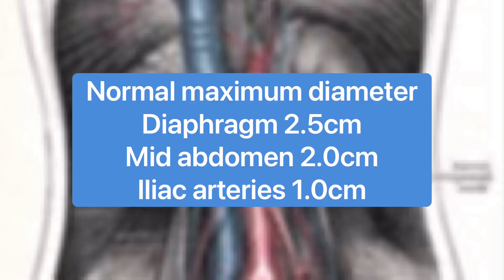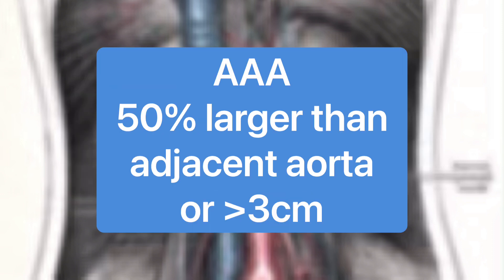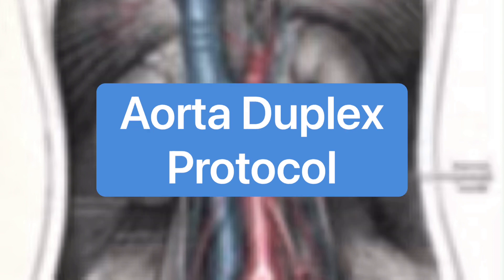The normal aorta measures at the diaphragm 2.5 centimeters, at the mid-abdomen 2 centimeters, at the bifurcation 1.8 centimeters, and the iliac arteries usually measure about 1 centimeter. Abdominal aortic aneurysms, or AAAs, are considered anything greater than 50% of a proximal segment of the aorta, or anything greater than 3 centimeters. About 10% of the population above 65 years old has a AAA, and it is about 3 times more common in men.